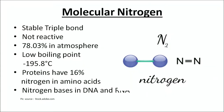We will first start with a little description of the nitrogen molecule. The nitrogen molecule is made up of two atoms bonded by a stable triple bond, and hence it is not reactive. The percentage of nitrogen in the atmosphere is 78.03%, and it has a low boiling point of minus 195.8 degrees centigrade. There are two chief molecules in every living cell, namely proteins and nucleic acids, which have nitrogen in them. Proteins have 16% nitrogen, and there are nitrogen bases in DNA and RNA.